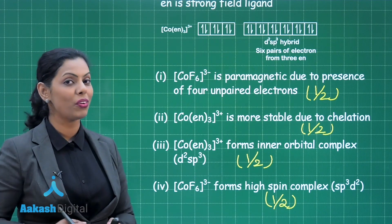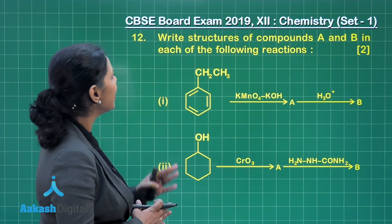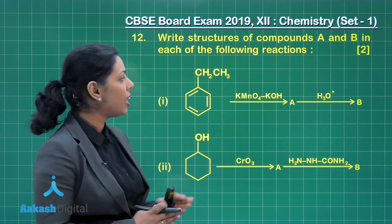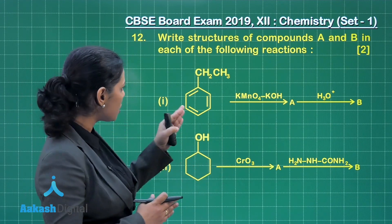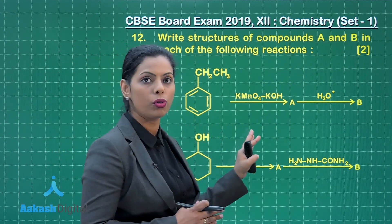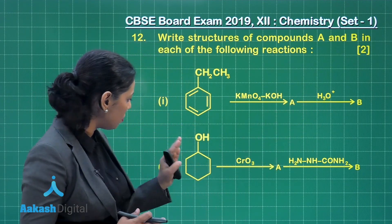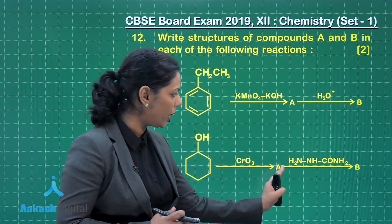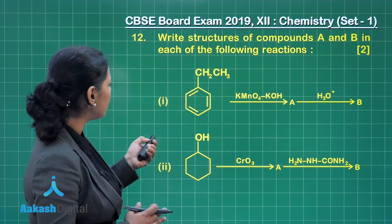Next is question number 12, which is based on reaction sequences. Write the structures of compounds A and B in each of the following reactions — two reactions given, each worth 1 mark. In the first reaction, ethylbenzene is treated with alkaline KMnO₄ to give product A, and when A is hydrolyzed in the presence of acid, it gives product B. In the second part, a cyclic alcohol is treated with chromic oxide to give A, and further treated with semicarbazide to give product B.